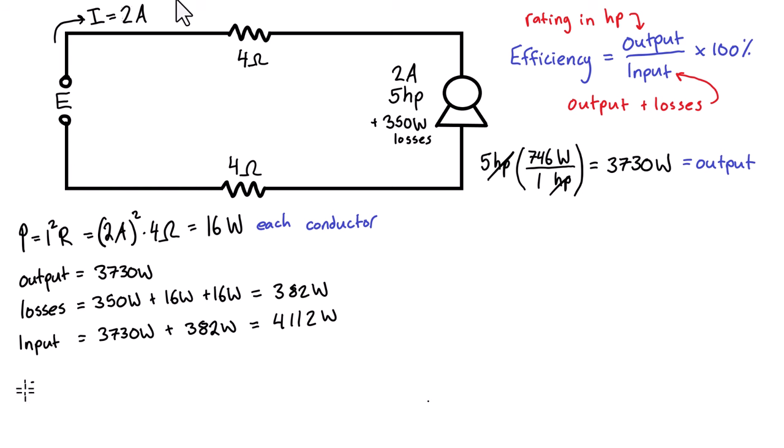So we can plug this into our efficiency equation to solve for efficiency. Remember that was the output divided by the input times 100%. If you like dealing with fractions you can forget about the 100% because when we go to actually write it out we have 3730 watts over 4112 watts and then we can multiply this by the 100%. But of course you're probably familiar with this, you're going to see this fraction here, it's going to be equal to 0.907 and that is equal to 90.7%.